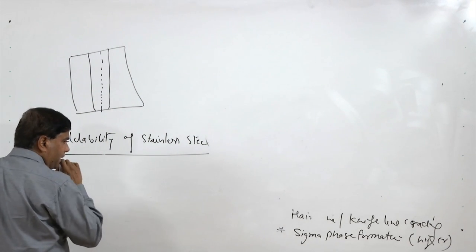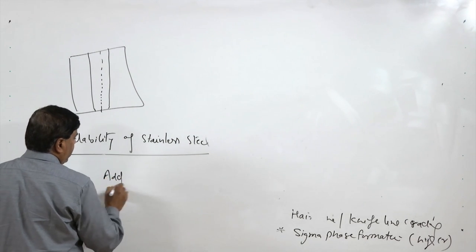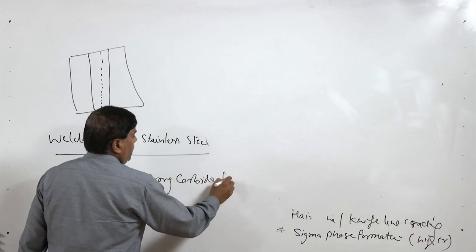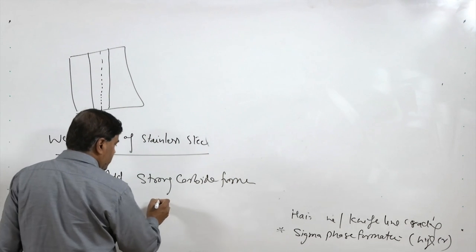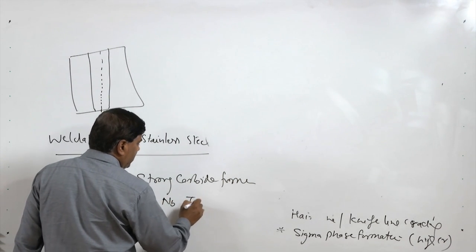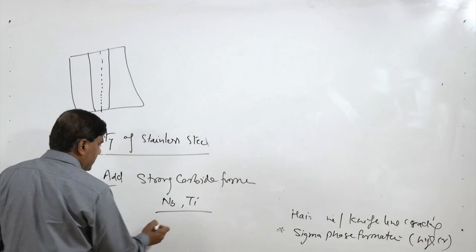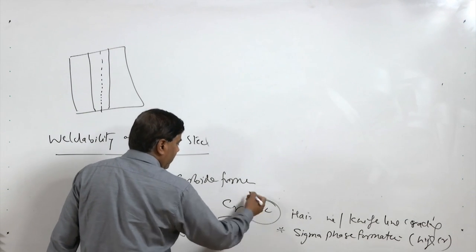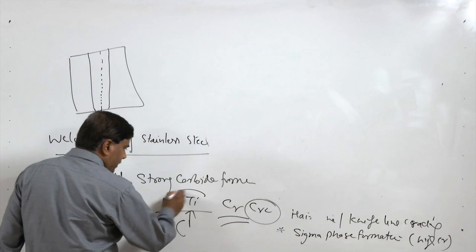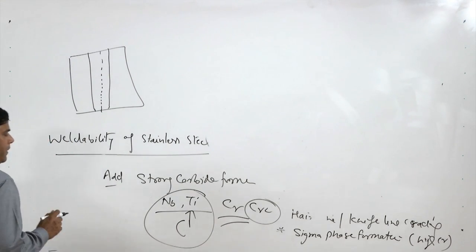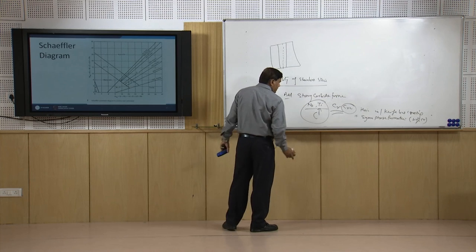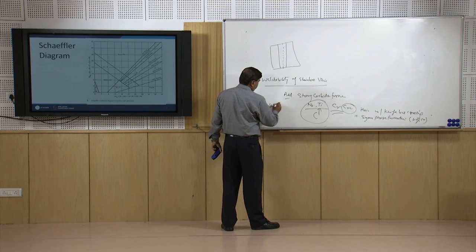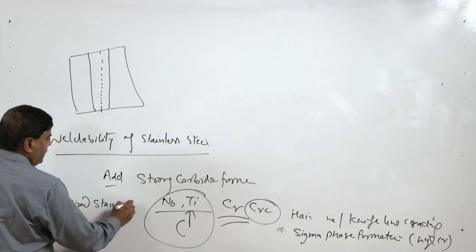Another method is to add strong carbide formers to the austenitic stainless steels. Strong carbide formers like niobium and titanium are commonly added. Whenever these are present, carbon reacts with these elements rather than with chromium, so chromium carbide precipitation is avoided. When these elements are added, the chromium carbide precipitation tendency is reduced, and we call it a stabilized stainless steel.